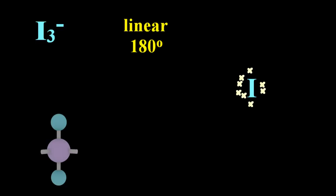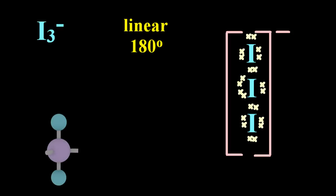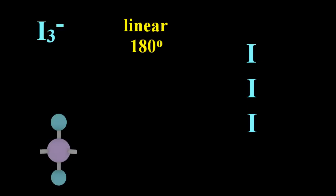The triiodide ion is linear. Those three electron pairs, or those three central electron domains, calls the linear shape. That's pretty messy with all those crosses, so let me draw it out again, but just using dashes.